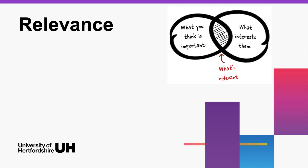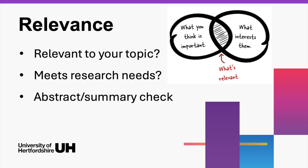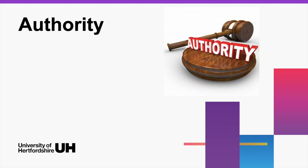Next, relevance. Is the information relevant to your topic? Does it meet the requirements of your research? Read the abstract or summary to determine if the source fits your needs. Also, consider the intended audience. Relevant information should be directly related to your topic and useful in supporting your arguments.